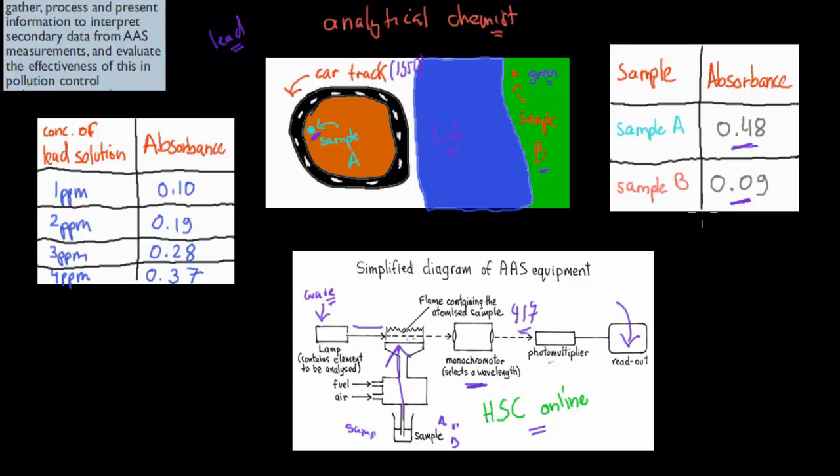So what does this information tell us? How can we use this information? Well, first of all, we generally have a standard sample data. We had our known concentration. Let's say concentration of 1 part per million of lead had an absorbance of 0.10, 2 ppm had 0.19, 3 ppm had 0.28, and 4 ppm had 0.37. So this data we gather beforehand, we might have gathered it ourselves or it might be given to us, and we have to use this data to figure out roughly which place is more polluted and by how much.